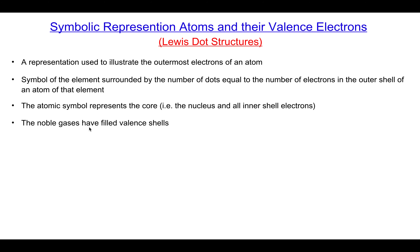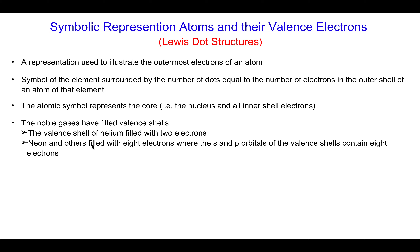Noble gases have a filled valence shell — that is, they have eight electrons in their outer shells and their octet is complete. Helium is an exception: it contains only two electrons in its valence shell, because the first shell has a maximum capacity of two electrons, making it a completely filled shell. For neon and other noble gases, the outer shell contains eight electrons — two in the s orbital and six in the p orbital of the valence shell.